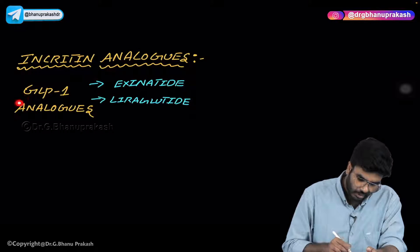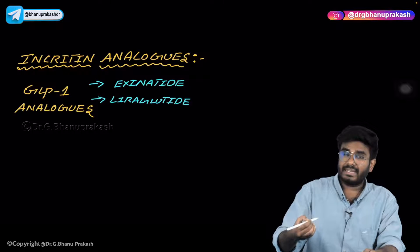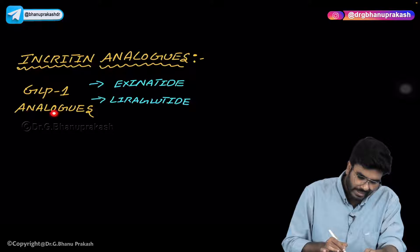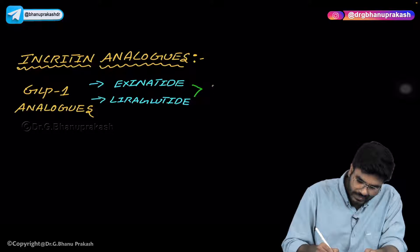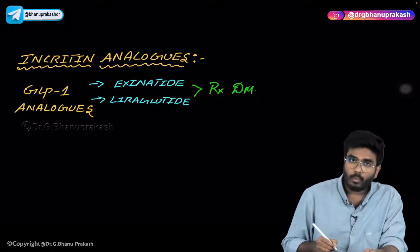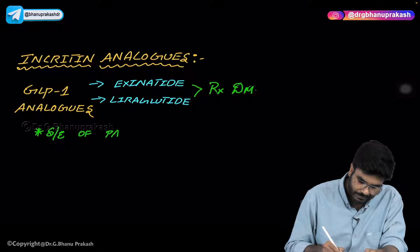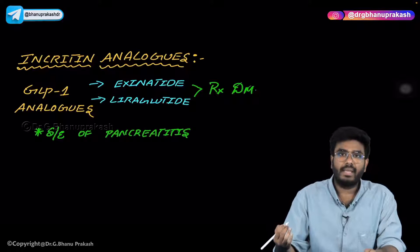GLP-1 analogs are very famous. Glucagon-like peptide-1 is an incretin, and analogs means drug-like molecules. GLP-1 analogs are exenatide and dulaglutide. These drugs are used in the treatment of diabetes mellitus. One important point: incretin analogs have a side effect of pancreatitis.